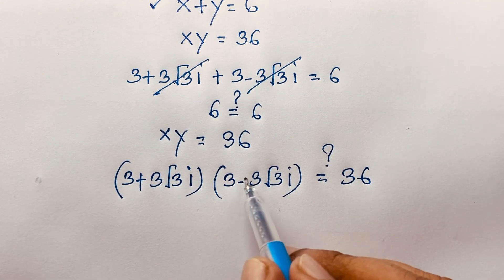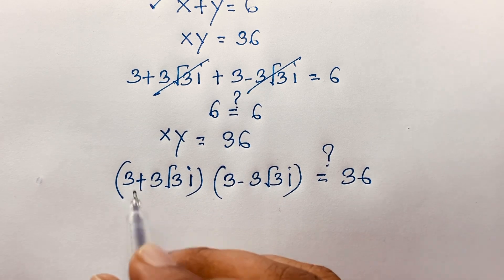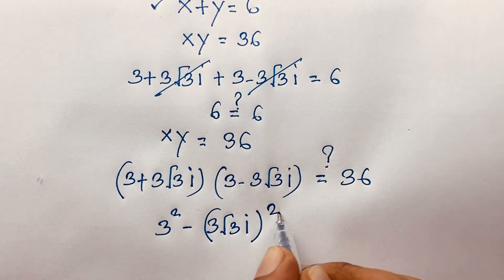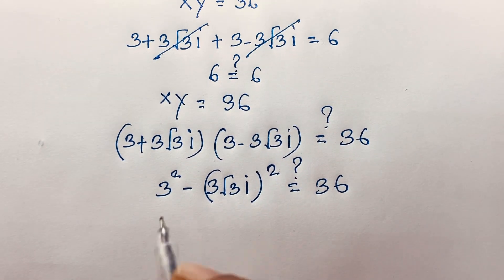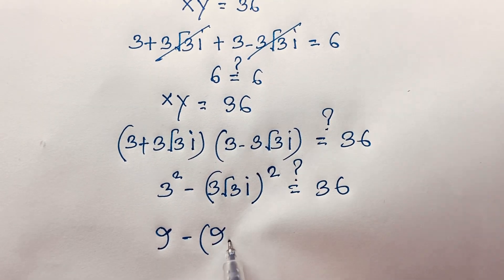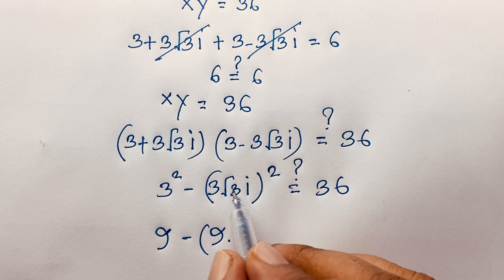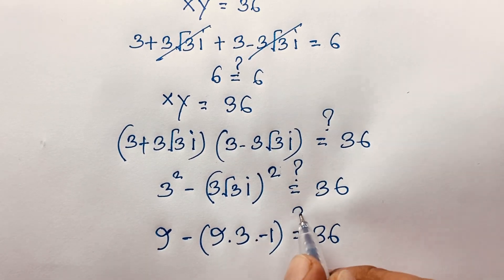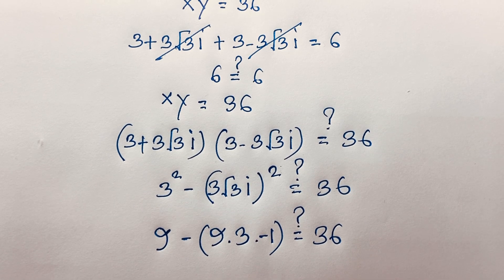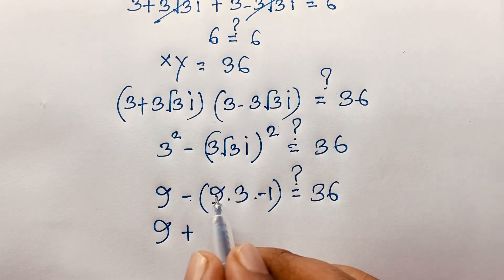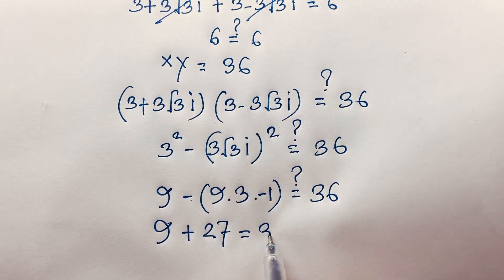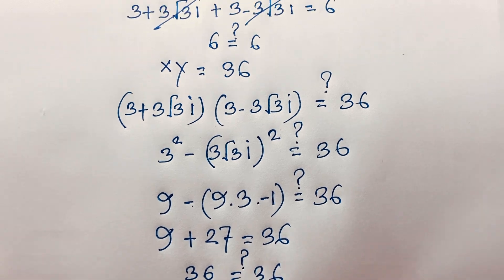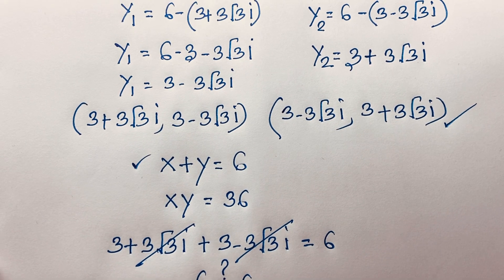For x times y: (3 plus 3√3 i)(3 minus 3√3 i). Using the identity (a + b)(a − b) = a² − b², this equals 3² minus (3√3 i)², which is 9 minus 9 times 3 times i². Since i² equals negative 1, this becomes 9 minus (−27) equals 9 plus 27 equals 36. Left-hand side equals right-hand side, confirming xy equals 36. This is a complex solution — there is no real solution. It is an interesting math problem.